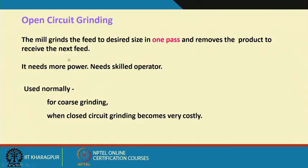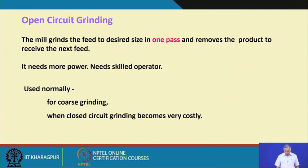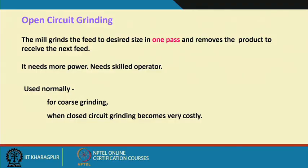Open circuit grinding needs more power because you will have relatively harder materials as well as softer materials. You need more power to break the harder materials, and the finer materials will be ground even further. It requires skilled operators who know that if the product discharge quality has changed, what should be the control parameters — what should be the RPM of the mill, what should be the input flow rate, whether to reduce the water quantity or the feed concentration. All these decisions have to be taken by the skilled operator.